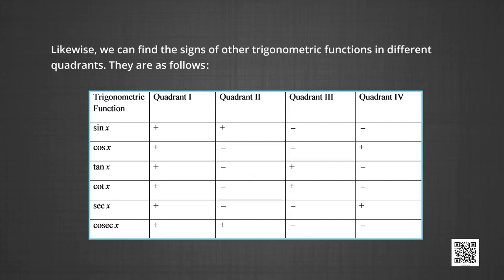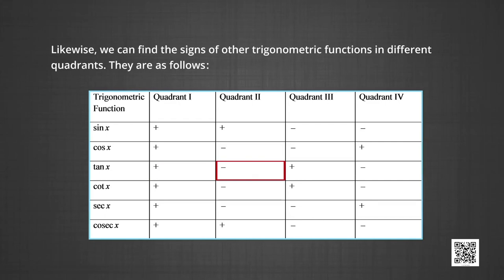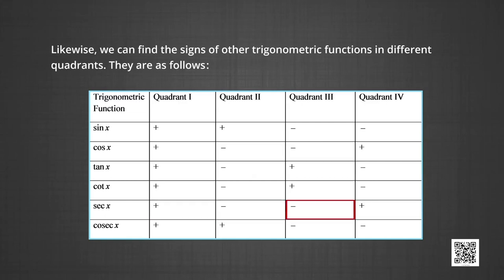The signs of all trigonometric functions by quadrant are as follows: sin x is positive in the first and second quadrants, negative in the third and fourth. cos x is positive in the first and fourth quadrants, negative in the second and third. tan x is positive in the first and third quadrants, negative in the second and fourth. cosec x is positive in the first and second quadrants, negative in the third and fourth. sec x is positive in the first and fourth quadrants, negative in the second and third.